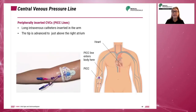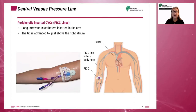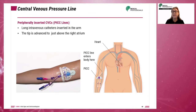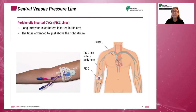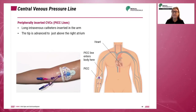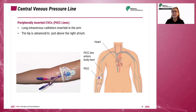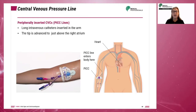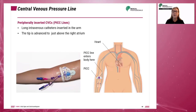Peripherally inserted CVCs or PICC lines are long intravenous catheters inserted in the arm. The tip is advanced to just above the right atrium. The preferred location is the superior vena cava, approximately 2 to 3 centimeters above the right atrial junction. Superior vena cava placement is preferred because of its size — infusions of intravenous fluids are much less caustic in central lines than in small peripheral veins.